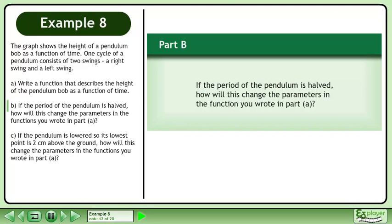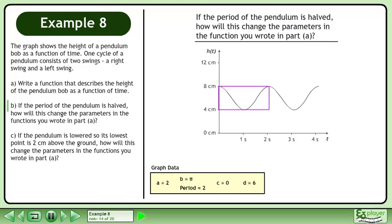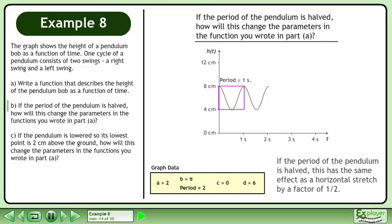Now we'll move on to Part B. If the period of the pendulum is halved, how will this change the parameters in the function you wrote in Part A? Bring up the graph we drew in Part A. If the period of the pendulum is halved, this has the same effect as a horizontal stretch by a factor of 1/2.